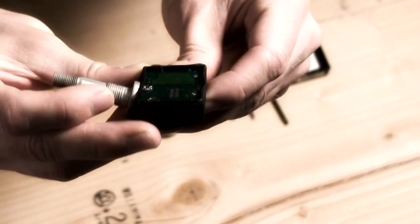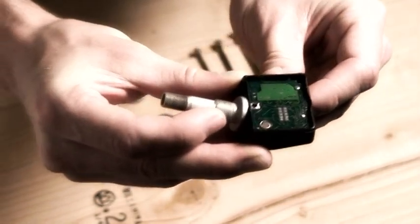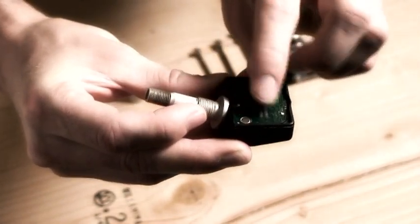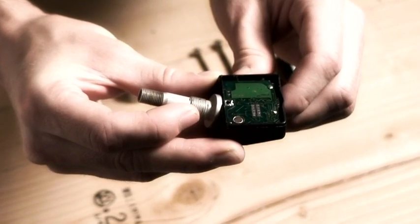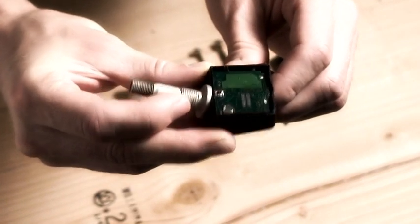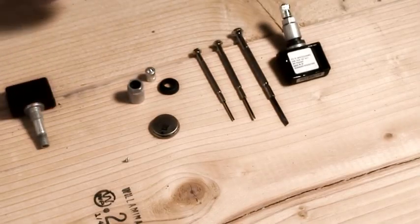It's imperative that you're very careful when you're removing the potting material because as you can see, this circuit board is just inside the bottom of the tire pressure sensor and you do not want to score it up with your screwdrivers when you're disassembling it.